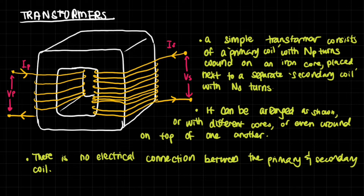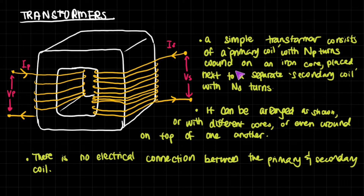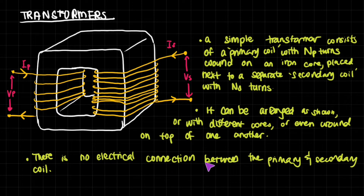Today we're going to talk about transformers, which can be used to change the voltage and the current in a flowing wire. A simple transformer consists of a primary coil, where the current comes in initially, with NP turns wound on an iron core, placed next to a separate secondary coil with NS turns. It can be arranged as shown or with different cores, even wound on top of one another. The important thing is that there is no electrical connection between the primary and secondary coils.